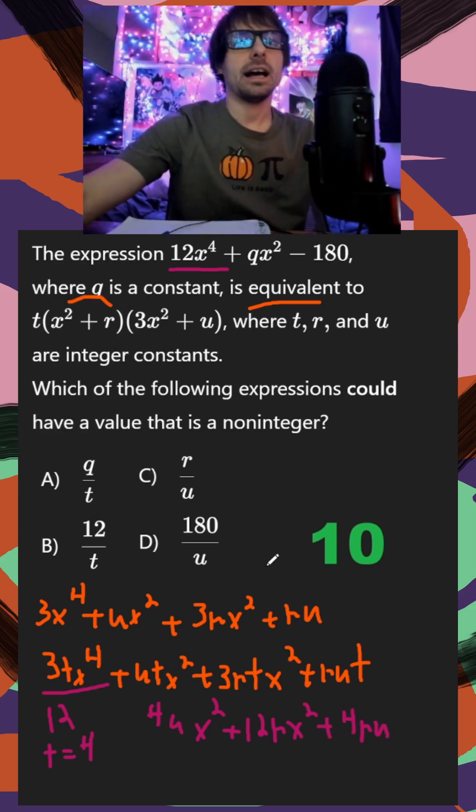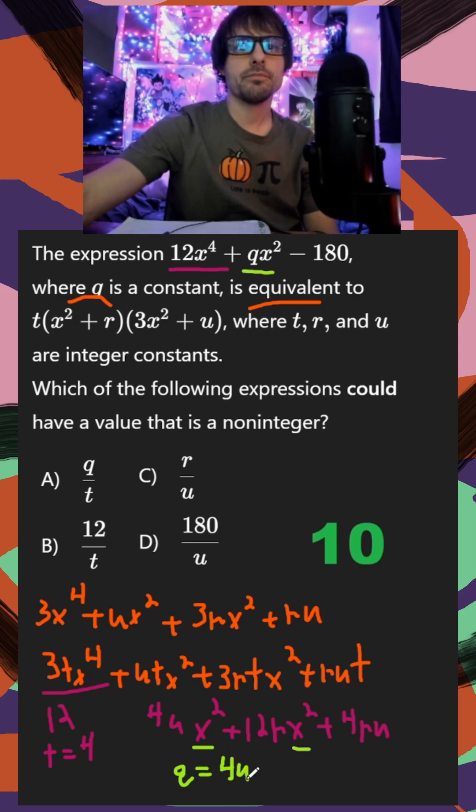And then finally, I can say my x squared term is equal to my x squared term. So this is where I just set my coefficients equal, I can say q is equal to 4u plus 12r. And then so my q term is defined. And finally, we have our c at the end, my negative 180 should be equal to 4ru.